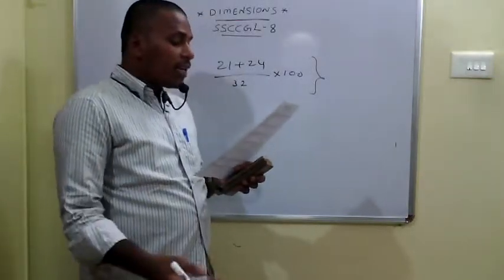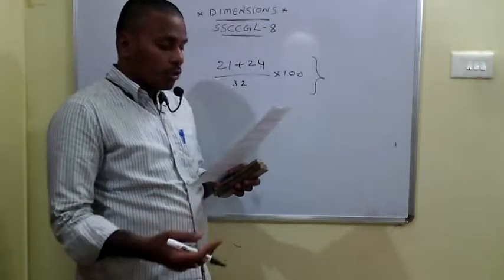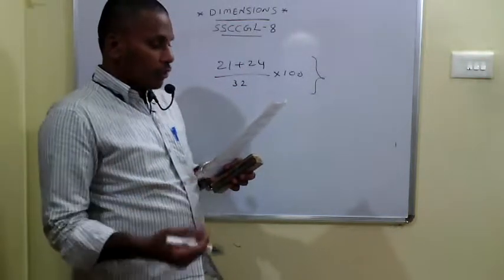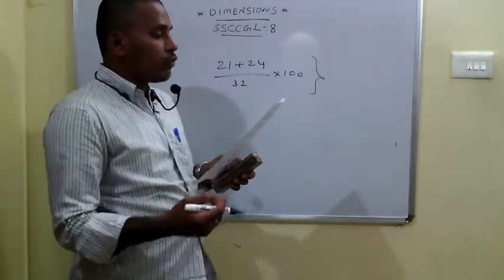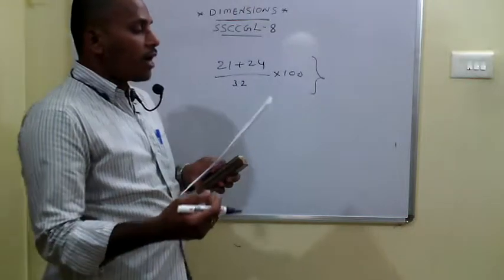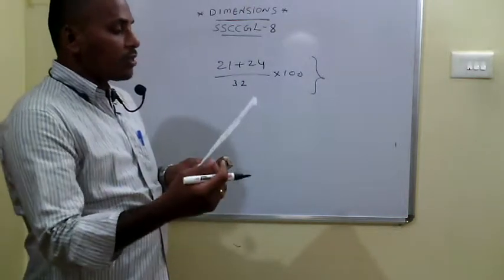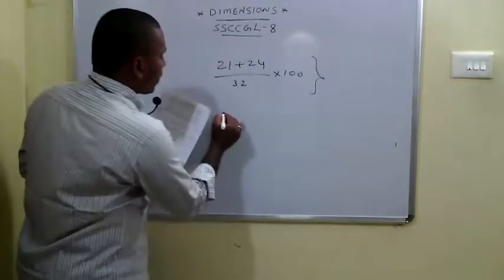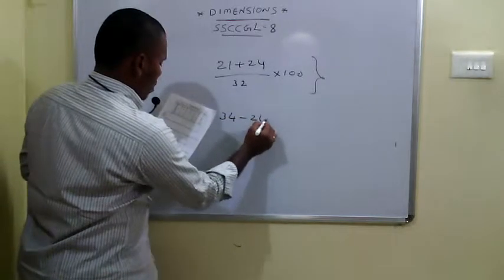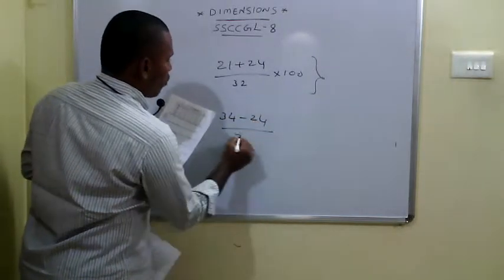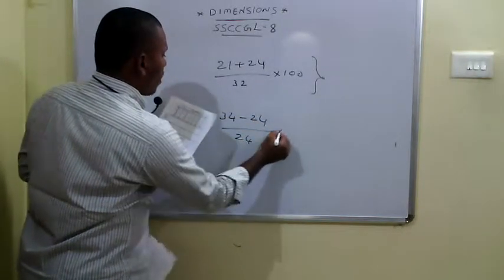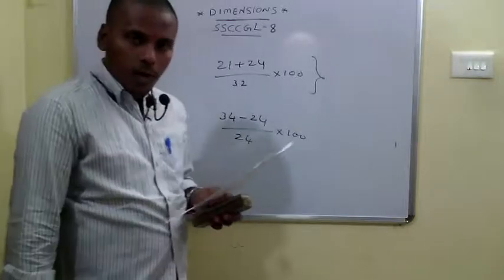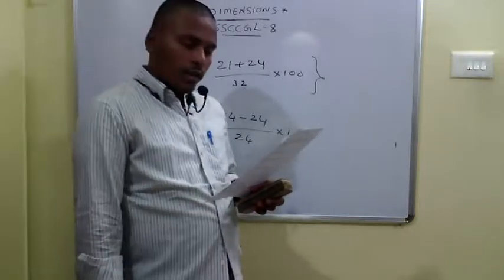The 74th question asks for the percentage increase in R-type mission tools from 2013 to 2014. R-type values are 24 in 2013 and 34 in 2014. The percentage increase is 34 minus 24 divided by 24 into 100, which simplifies to 10 by 24 into 100, giving approximately 40 percent.